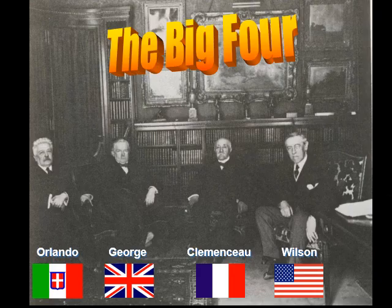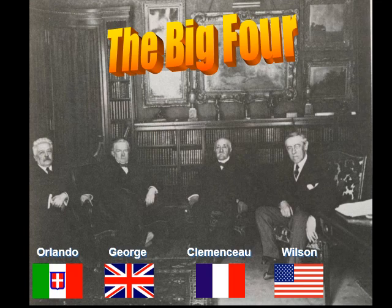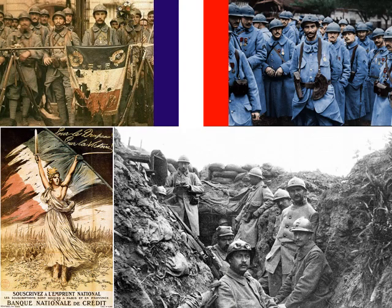And by the end of that war, these are the leaders that we're looking at. Prime Minister Orlando — Italy has a king at this time, so it's a constitutional monarchy. Prime Minister Lloyd George of Great Britain, again another constitutional monarchy. Prime Minister Clemenceau, French — and France was a republic. And then by the time the end of the war, Woodrow Wilson, President of the United States. And there's one missing player — we'll get to him later.